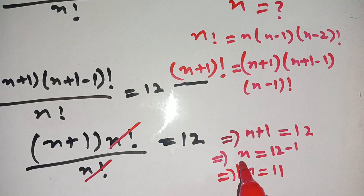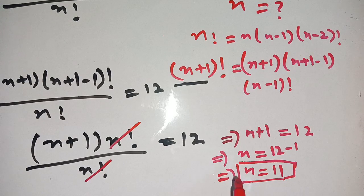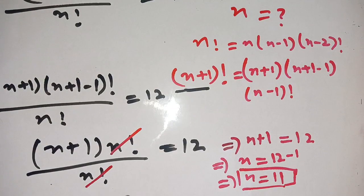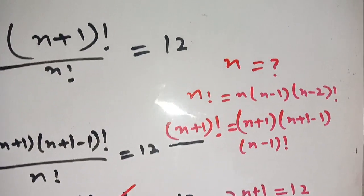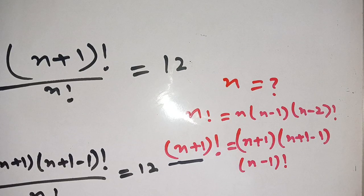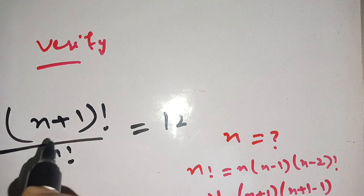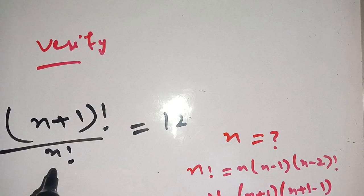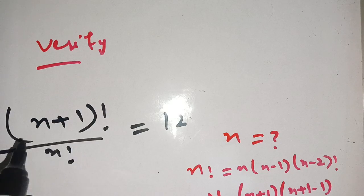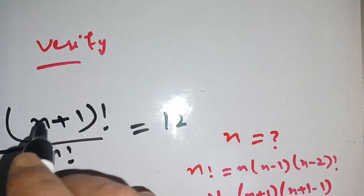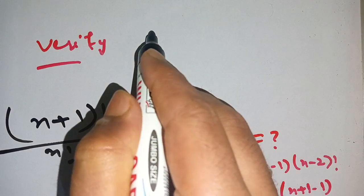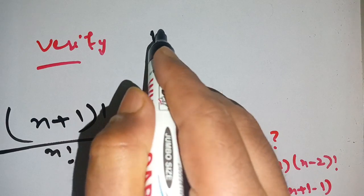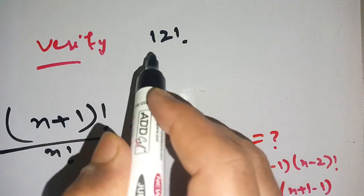This is our target value of n, so n = 11. Now in order to verify, we take the left-hand side: (n+1)! divided by n!. In place of n we put 11, and we get (11+1)! which becomes 12! divided by 11!.